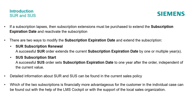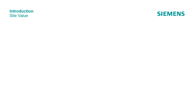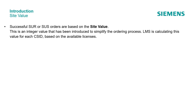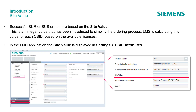Which of the two subscriptions is financially more advantageous for the customer in the individual case can be found out with the help of the LMS cockpit or with the support of the local sales organization. The site value: successful SUOR or SUS orders are based on the site value. This is an integer value that has been introduced to simplify the ordering process. LMS calculates this value for each CS ID based on the available licenses. In the LMU application, the site value is displayed in the page settings under the node CS ID attributes. The new CS ID attributes page provides all the necessary information at a glance: the product family, the subscription expiration date, when the subscription expiration date was refreshed the last time, the site value, when the site value was refreshed the last time, and whether the source is an online or offline connection.